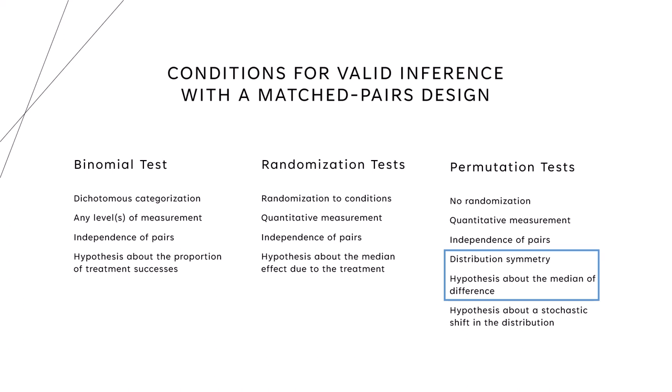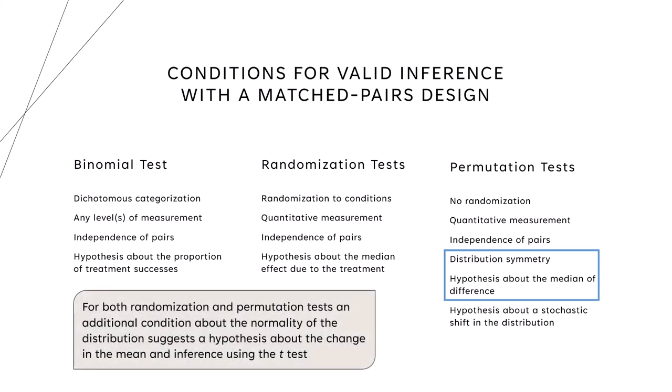I must point out that for both randomization and permutation tests, if you have an additional condition about the normality of the distribution — if there is a reason to believe that you have a normal distribution —